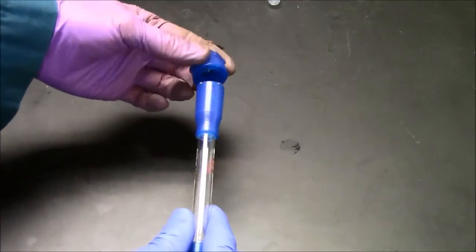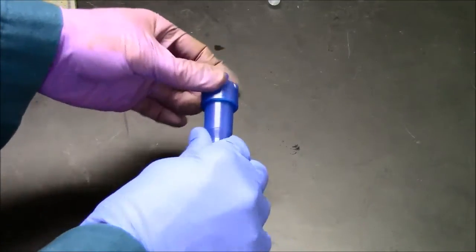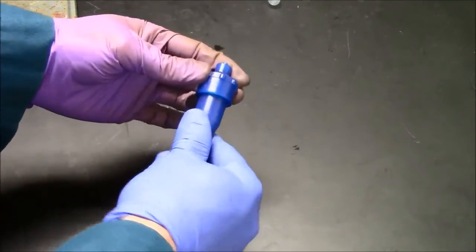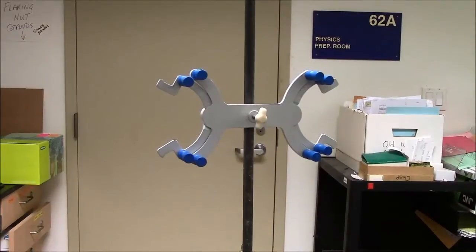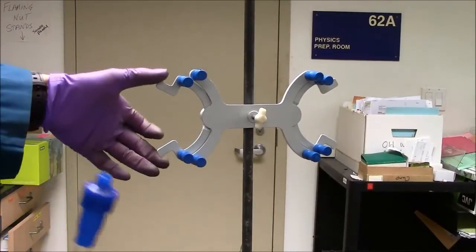This lid, similarly, will attach to the top of the column, and again, quarter turn, tight. These columns can be clamped to a burette clamp fairly easily.